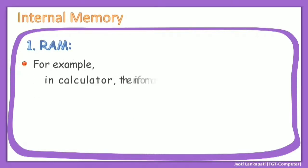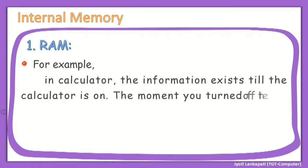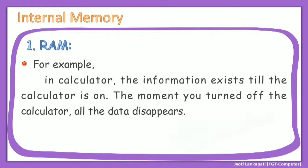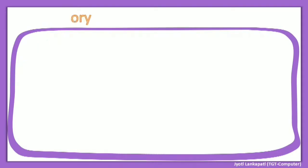For example, in a calculator, the information exists as long as the calculator is on. The moment you turn off the calculator, all the data disappears. So RAM is temporary memory — it loses its information when we switch off the computer or when power goes off.